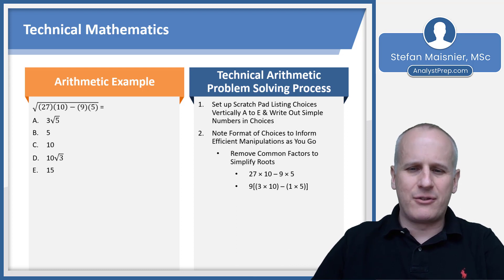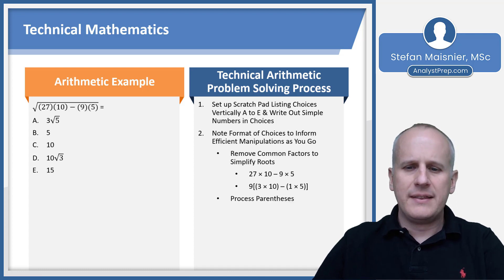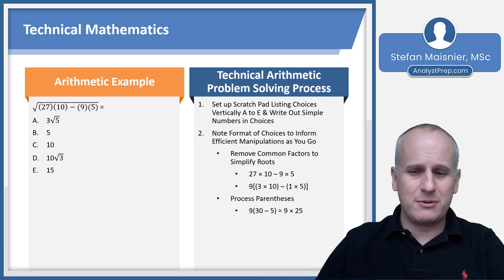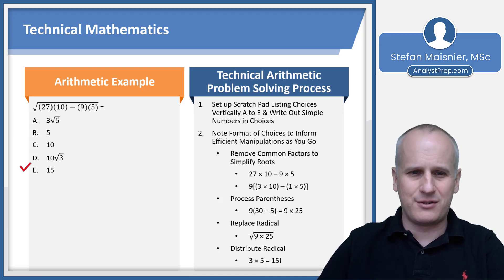We're going to have to remove common factors to simplify the square root. We've got 27 times 10 minus 9 times 5, and I'm just going to consider it without the square root for now. We pull out a 9 from each term on either side of the subtraction. I can pull a 9 out of 27, and that leaves 3 times 10. I can pull a 9 out of 9 times 5, and that leaves 1 times 5. Then we process the parentheses inside of the big parentheses, and we know that 3 times 10 is going to be 30, 1 times 5 is going to be 5, so we really have 9 times 25. We're going to put our radical back in, so now we've got the square root of 9 times 25. We can then pull out perfect squares—the square root of 9 becomes 3, the square root of 25 becomes 5 when we distribute the radical, and that gives us 3 times 5 equals 15.